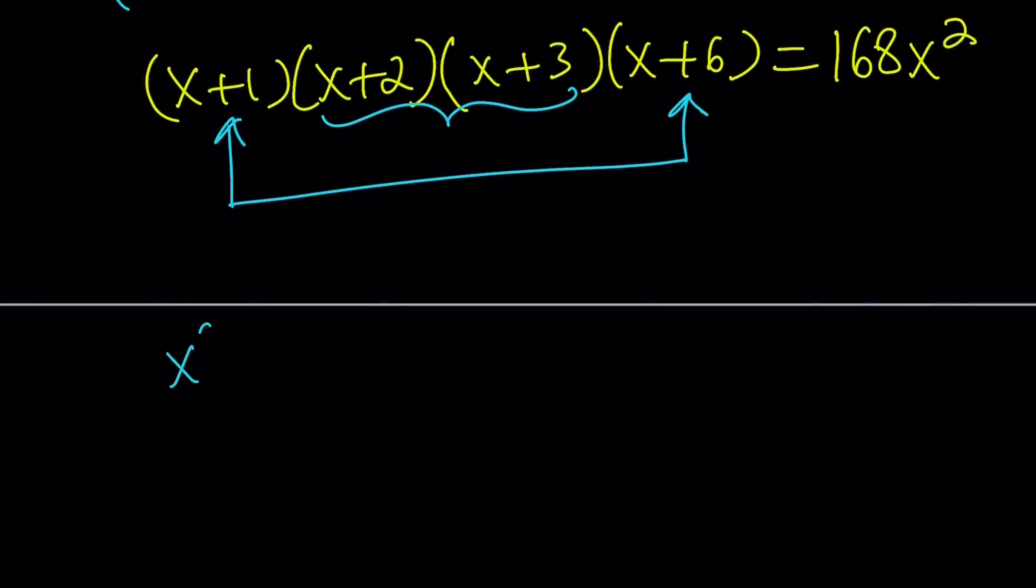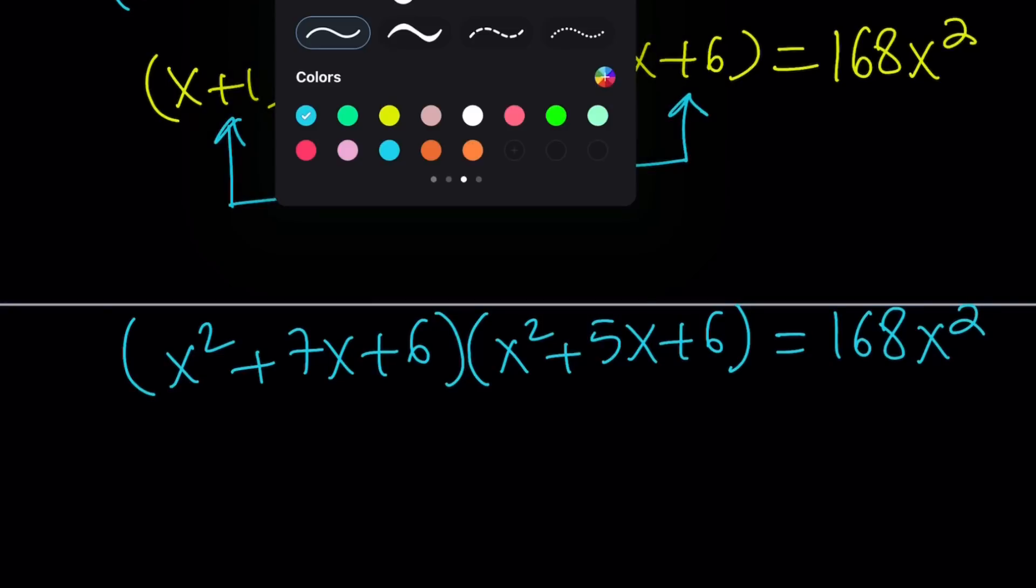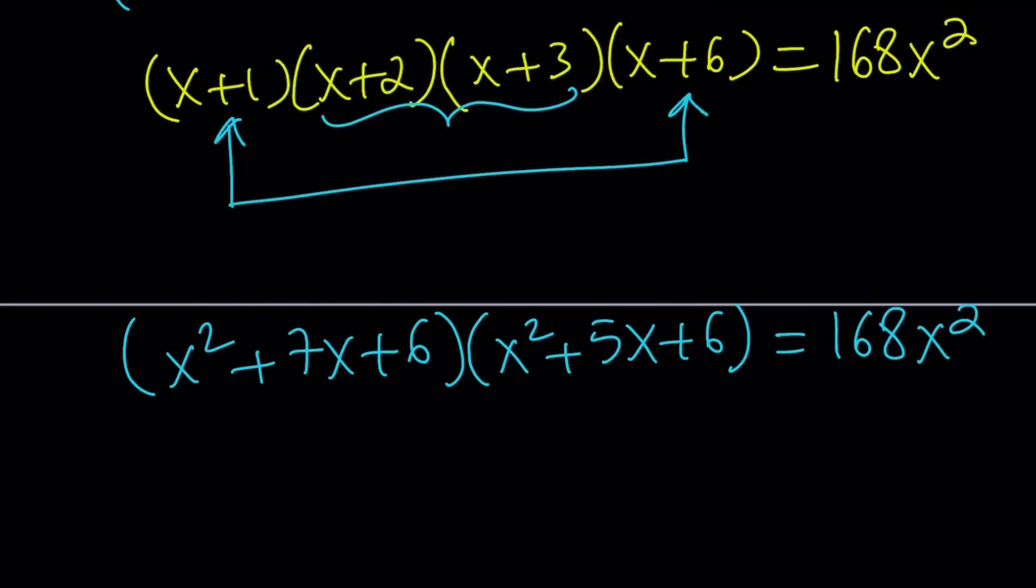I'm going to multiply these two first, x squared plus 7x plus 6, and then multiply the ones in the middle, x squared plus 5x plus 6 equals 168x squared. Still not very nice, but here's the thing. We're going to divide both sides by x squared because we want to get a constant on the right-hand side. Does that make sense?